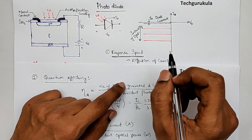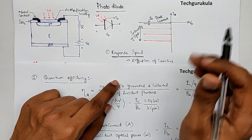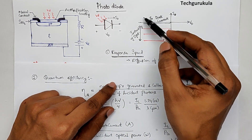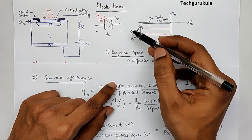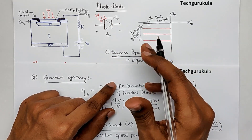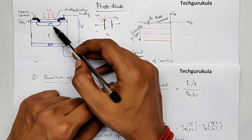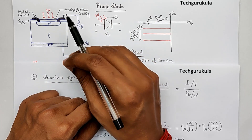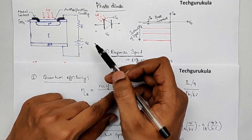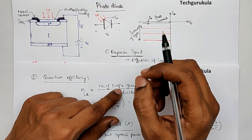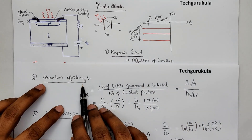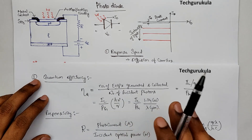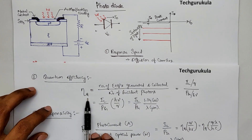In an Avalanche Photo Diode, if one photon generates one electron-hole pair, we would have multiplication — meaning there is initial amplification from the device itself when operating in the avalanche multiplication region. In an Avalanche Photo Detector, quantum efficiency can be greater than one because we have internal amplification. Obviously, for a standard PIN photo detector not in avalanche multiplication, the quantum efficiency would be less than one.